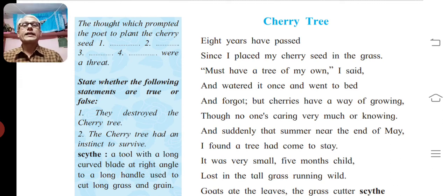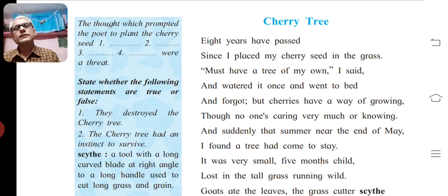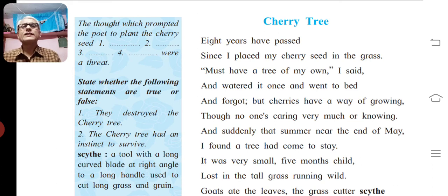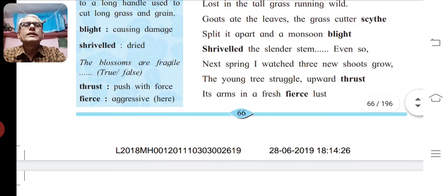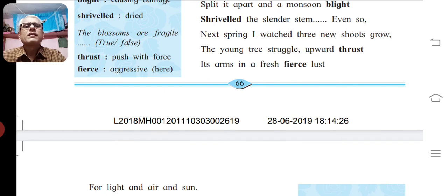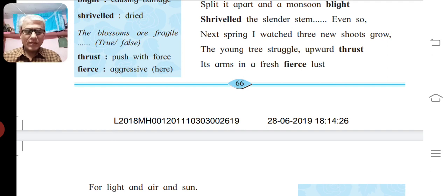Now let's go to the second margin activity: 'State whether the following statements are true or false.' First statement — 'They destroyed the cherry tree' — is false. Second — 'Cherry tree had an instinct to survive' — is true. Third — 'The blossoms are fragile' — is true.